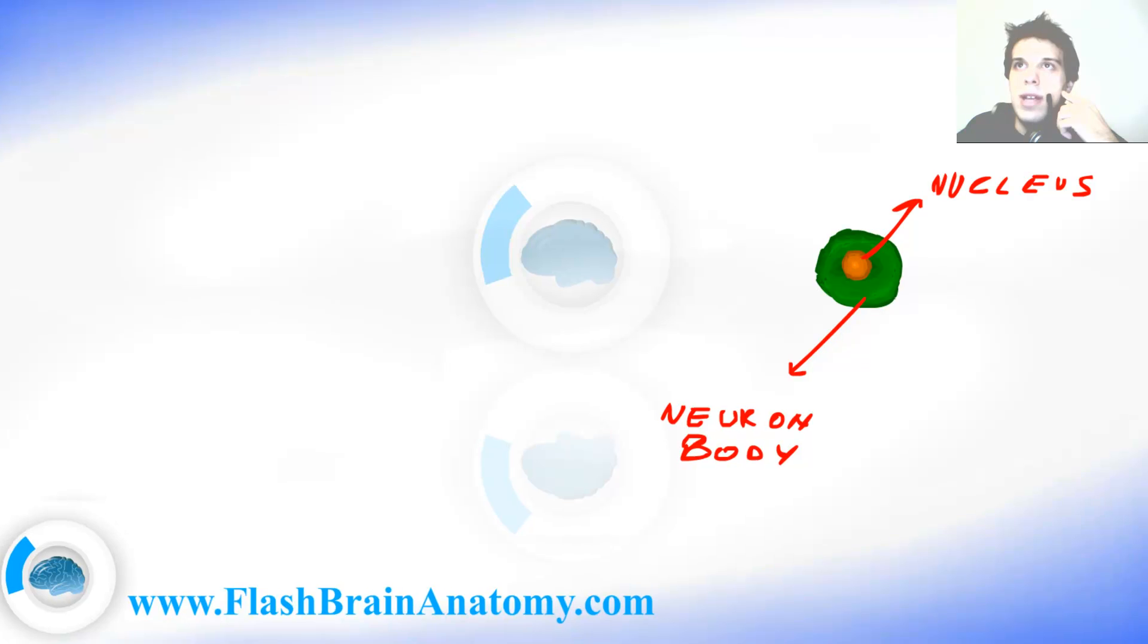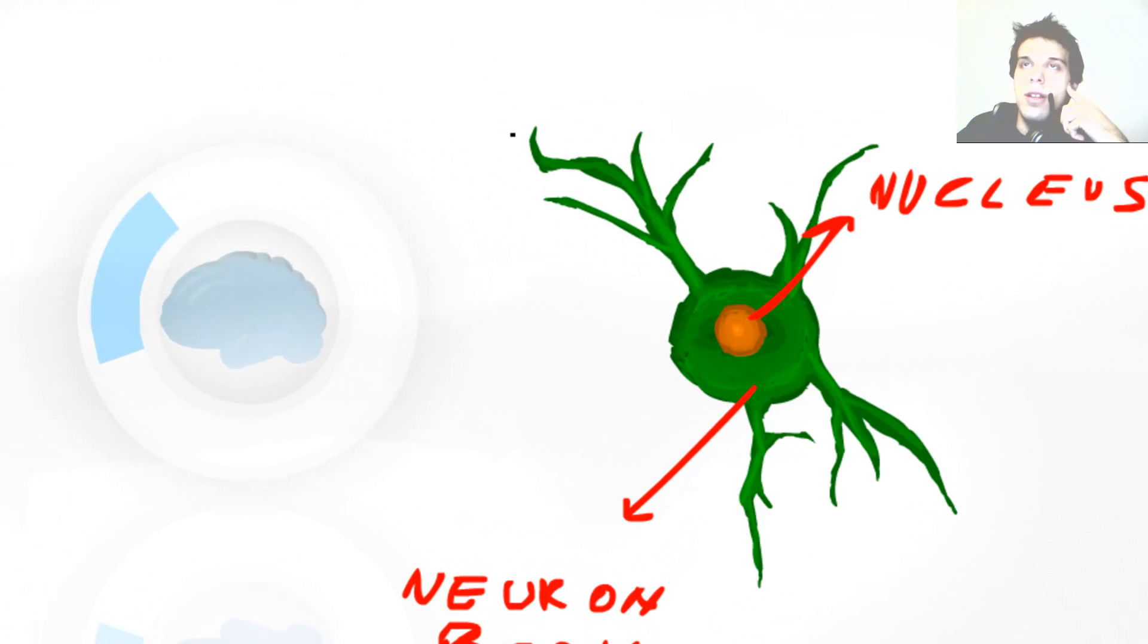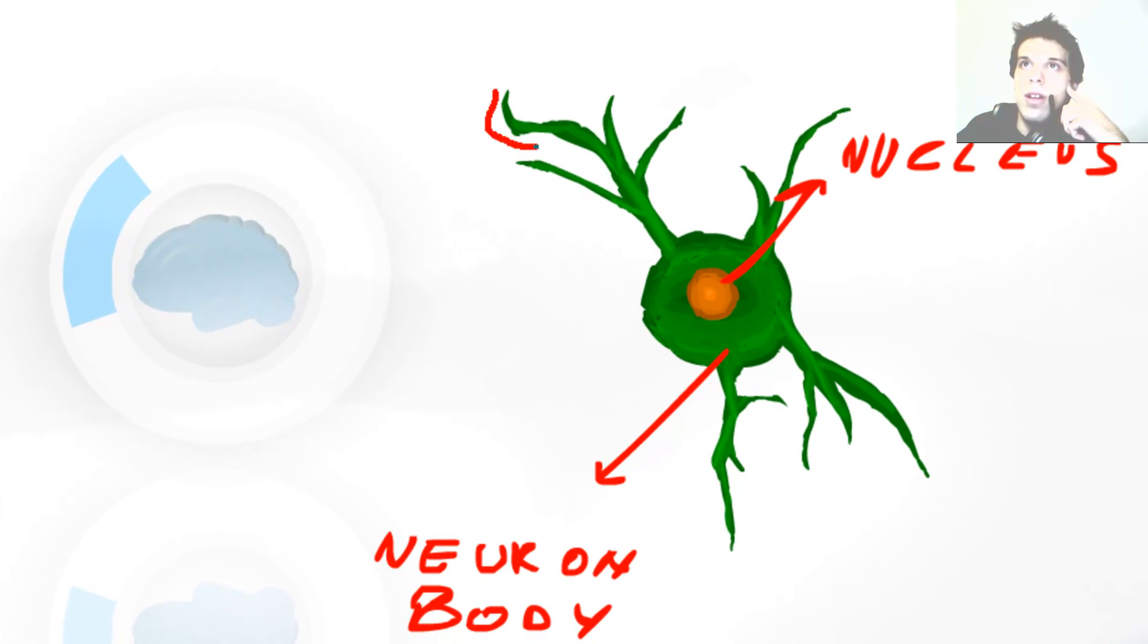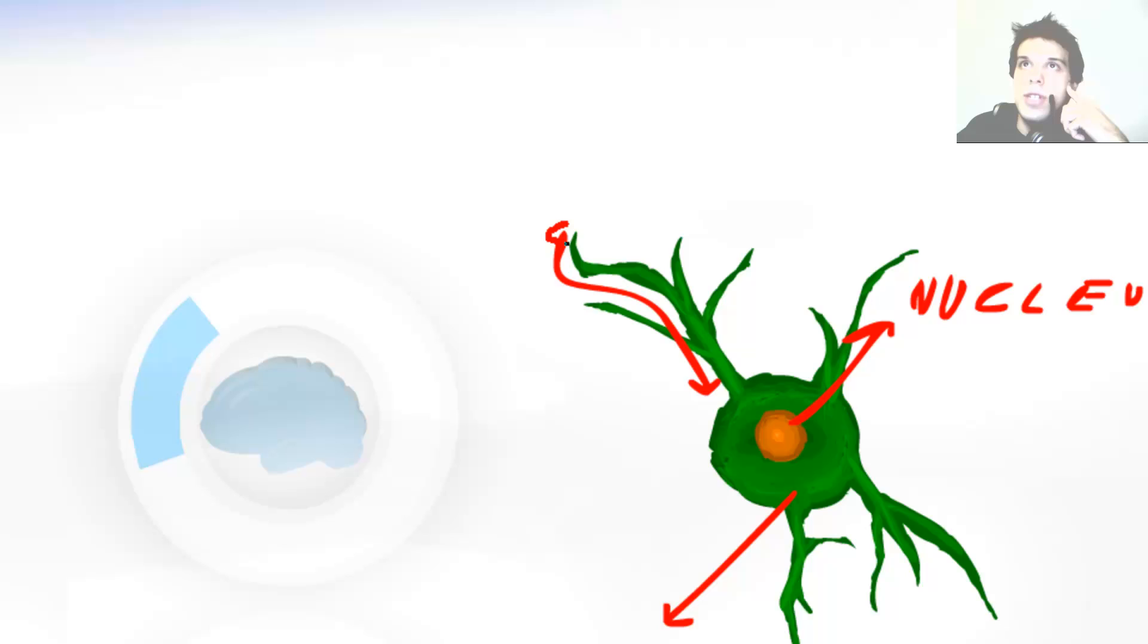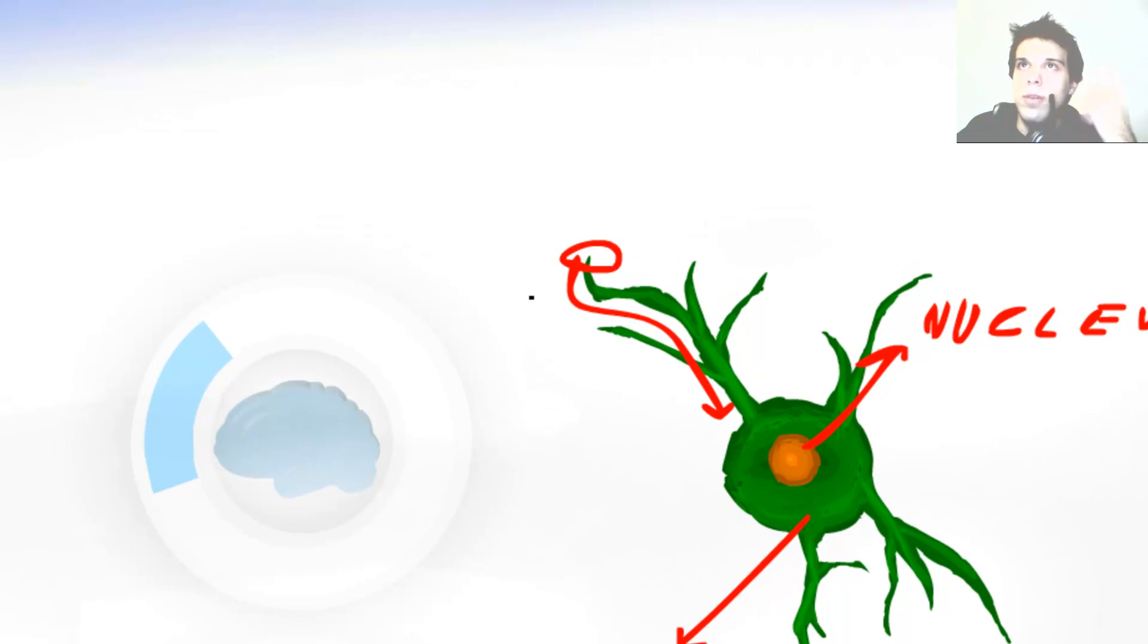Dendrites are protoplasm extensions of cell body. They are supposed to receive the signal and conduct it towards the cell body. The place where they receive the signal is called a synapse. To learn about the synapses please watch next video.